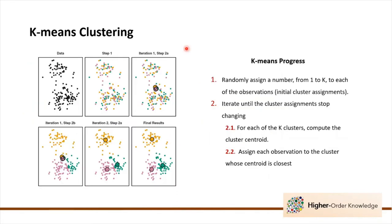Now I'm going to explain the steps involved in k-means clustering. First, we randomly assign a number from 1 to k to each of the observations — these are the initial cluster assignments. For instance, in this case we have three clusters, and each observation is assigned a cluster: yellow, pink, or green.